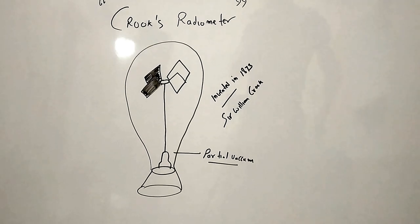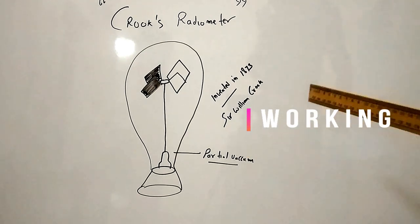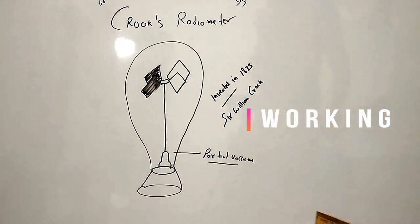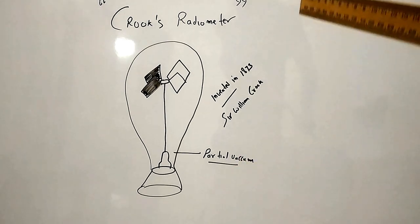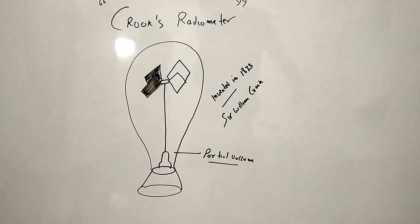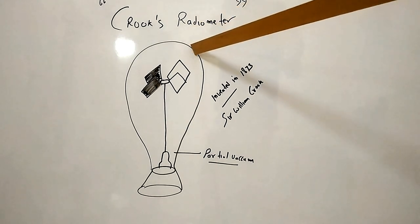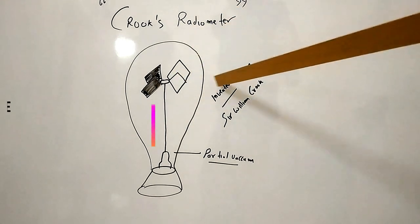Now we are working on Crookes Radiometer. When we use the radiometer, we use a radiant light source. This is the heat region.